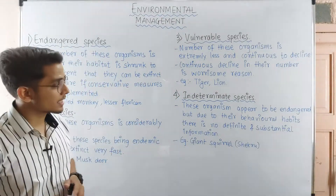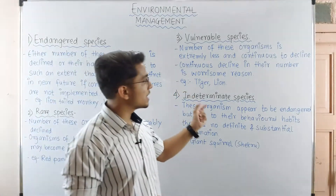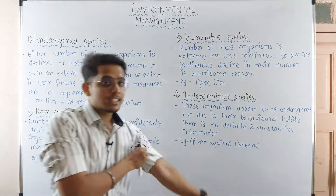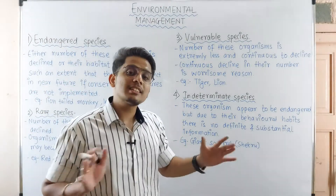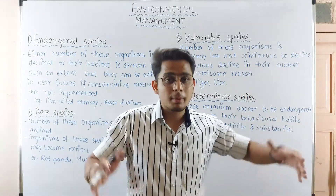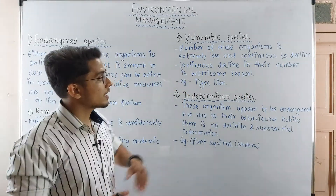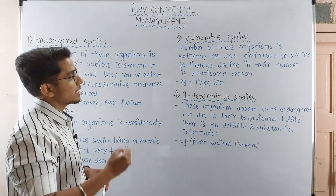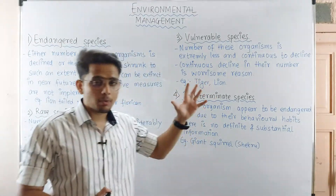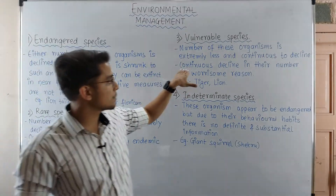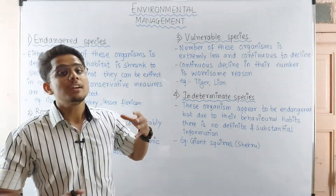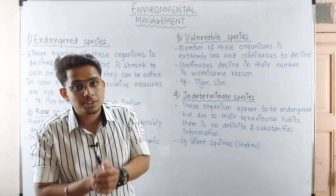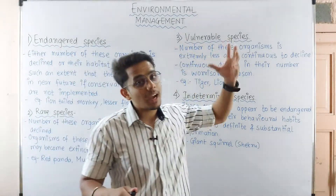Now we will look at vulnerable species. The number of these organisms is extremely less and continues to decline. These organisms are present but in very small amounts, and their count keeps decreasing. The continuous decline in their number is worrisome — we are concerned about them because their population keeps falling.